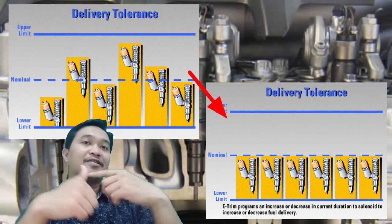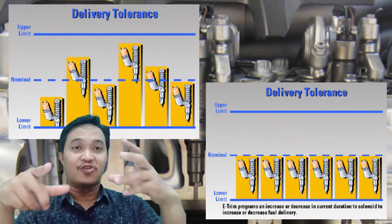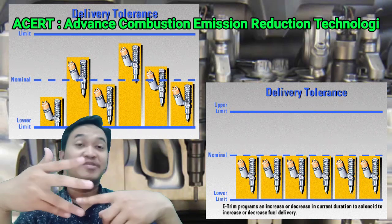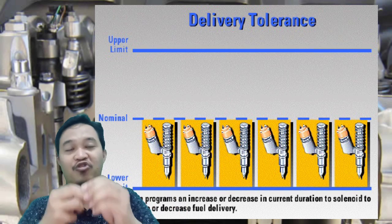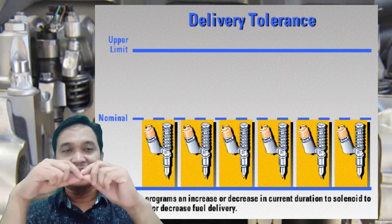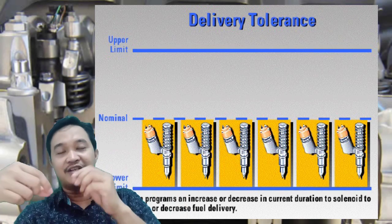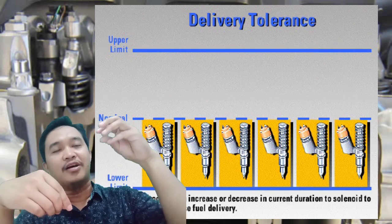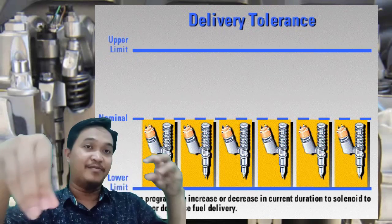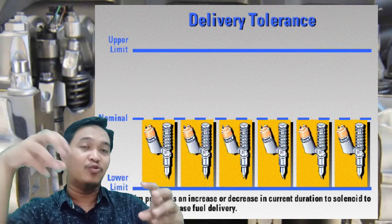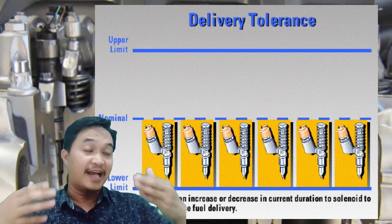Hasilnya apa? Yang pertama adalah emisi menjadi bagus karena khususnya Caterpillar sudah menganut teknologi ACERT — advanced combustion reduction emission technology. Dan dia juga pasti menghasilkan power yang sangat baik, karena injektor yang lemah sudah dikompensasi. Kalau injektornya lemah pengabutannya, maka arus yang dikirim dari ECM harus diperkuat sedikit. Kalau injektor yang sudah lebih kuat injeksinya, maka arus yang dikeluarkan oleh ECM harus dilemahkan sedikit. Itulah kenapa si injektor harus dikenalkan dengan ECM, untuk mengatur seberapa besar kompensasi yang diperlukan oleh injektor baru untuk menghasilkan pengabutan yang sama dengan yang lain.